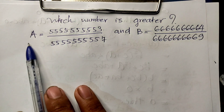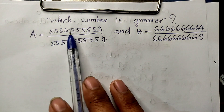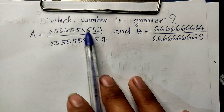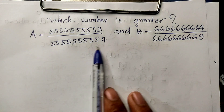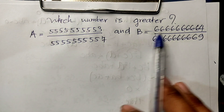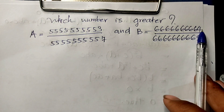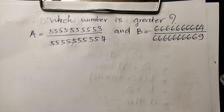Perhaps a is equal to 5555555555 divided by 5555557, and b is 6664 divided by 666669. Do you know how to solve this?